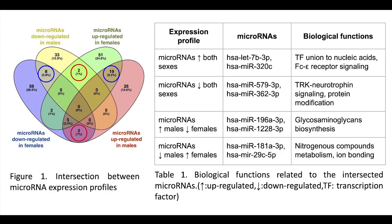The second intersection revealed that 8 plus 19 microRNAs, marked in blue, express the same pattern in both sexes, so they are disease markers. On the other hand, 2 plus 2 microRNAs, marked in red, presented an opposite profile in both sexes, so they are sex-dependent markers.